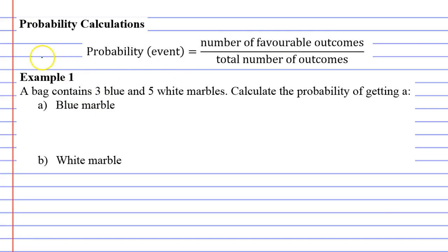So if we look at example one, a bag contains three blue and five white marbles and we're going to calculate the probabilities below. The first thing that's important here is to recognize that if I've got three blue and five white marbles I've got a total of eight marbles and that's quite important.